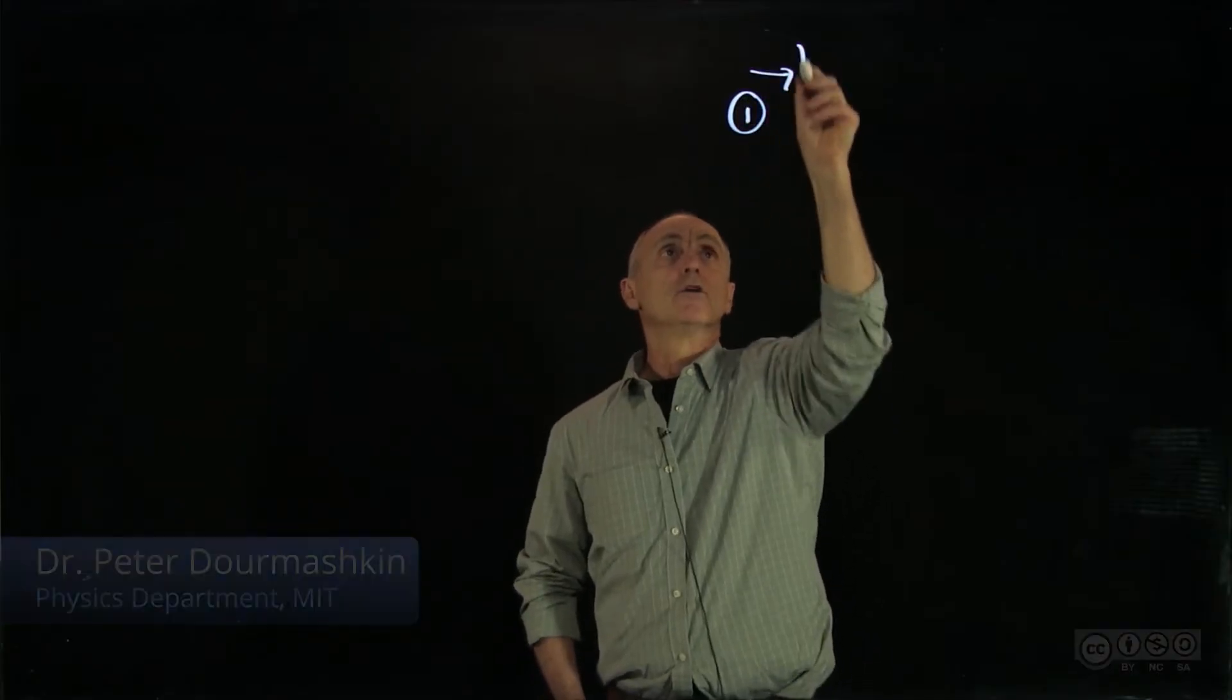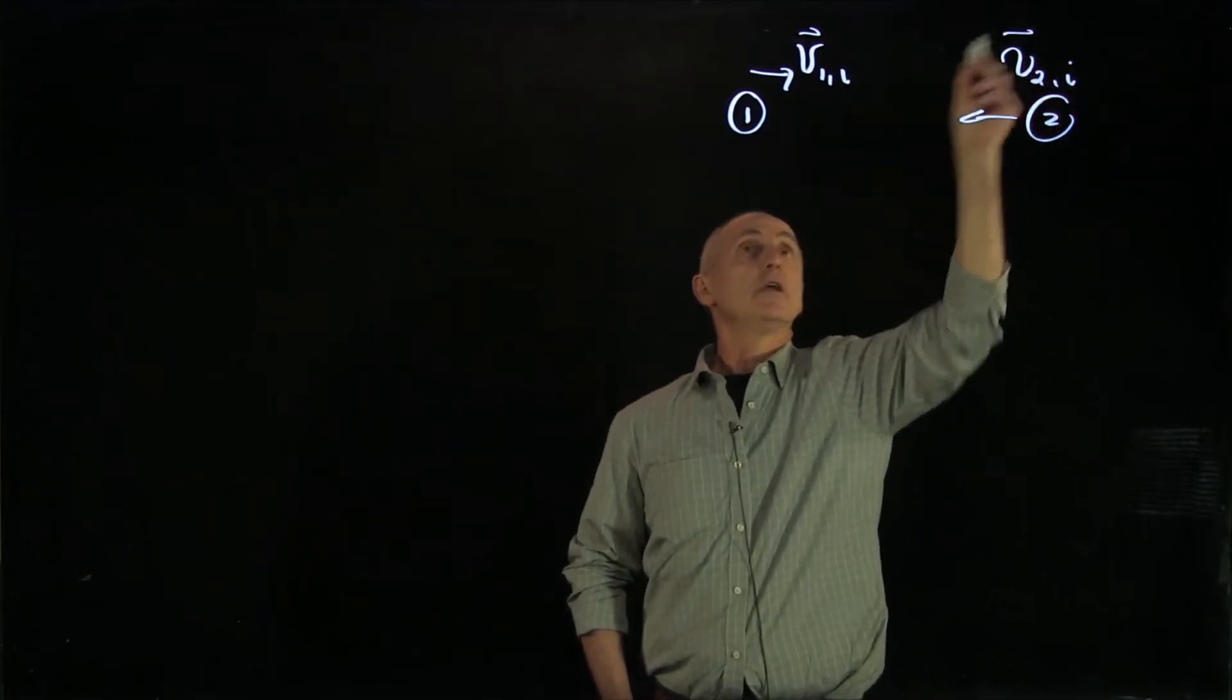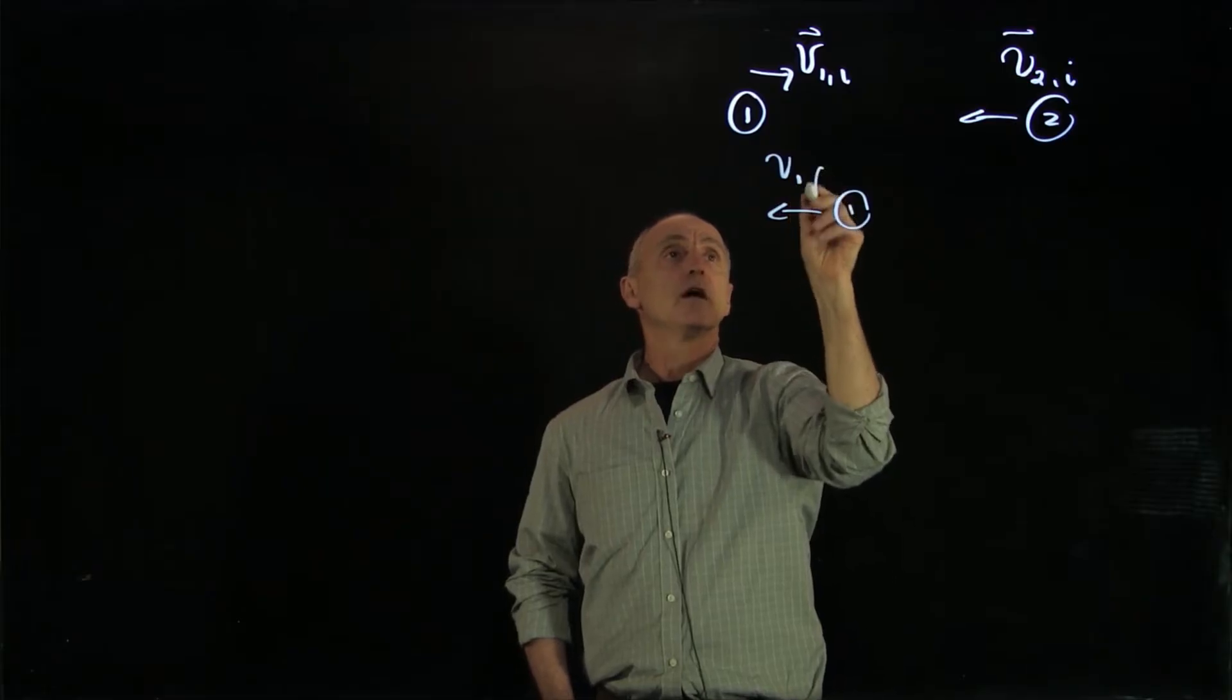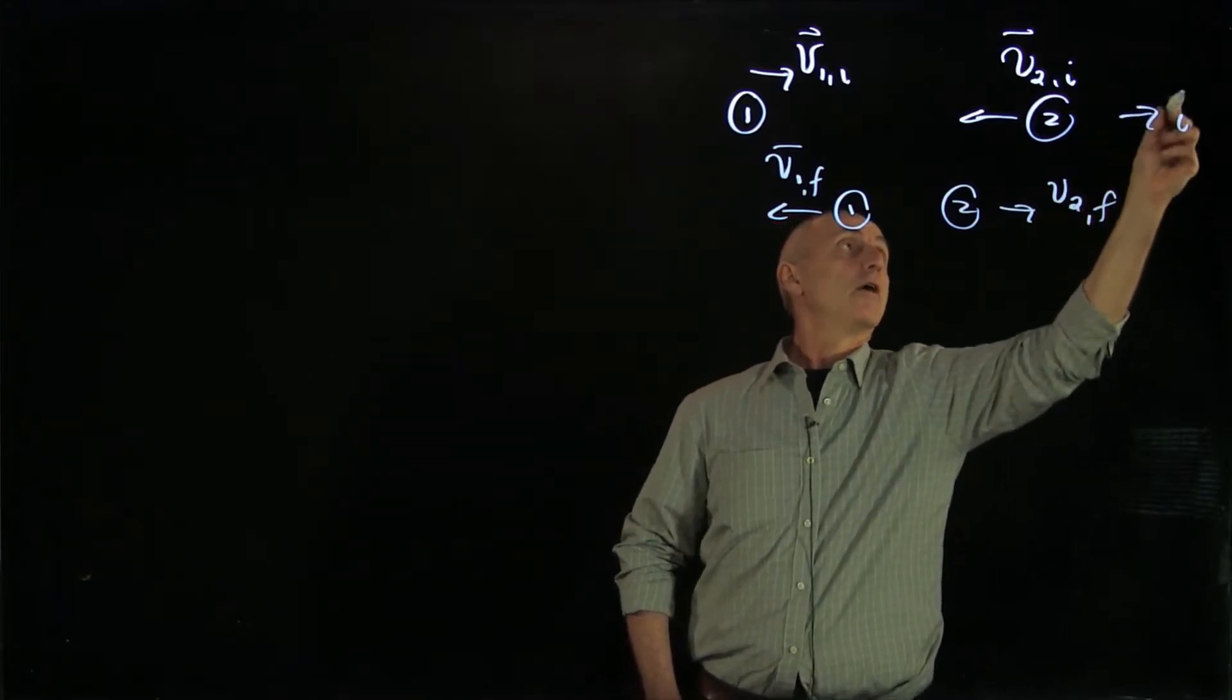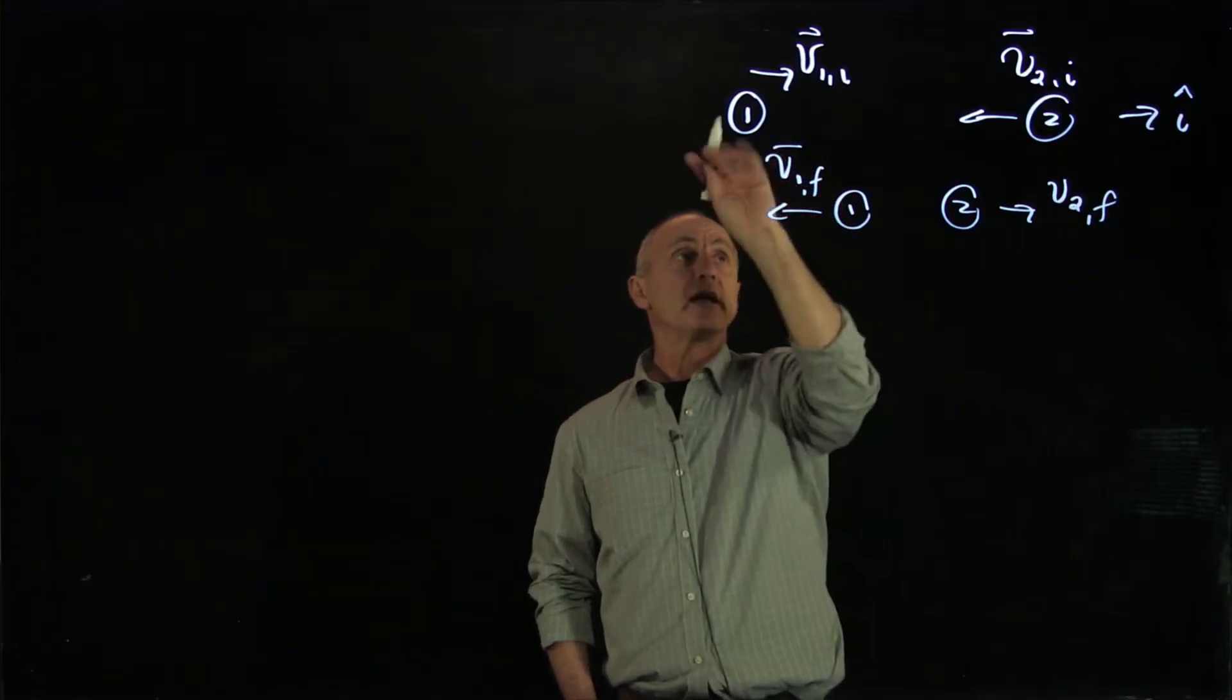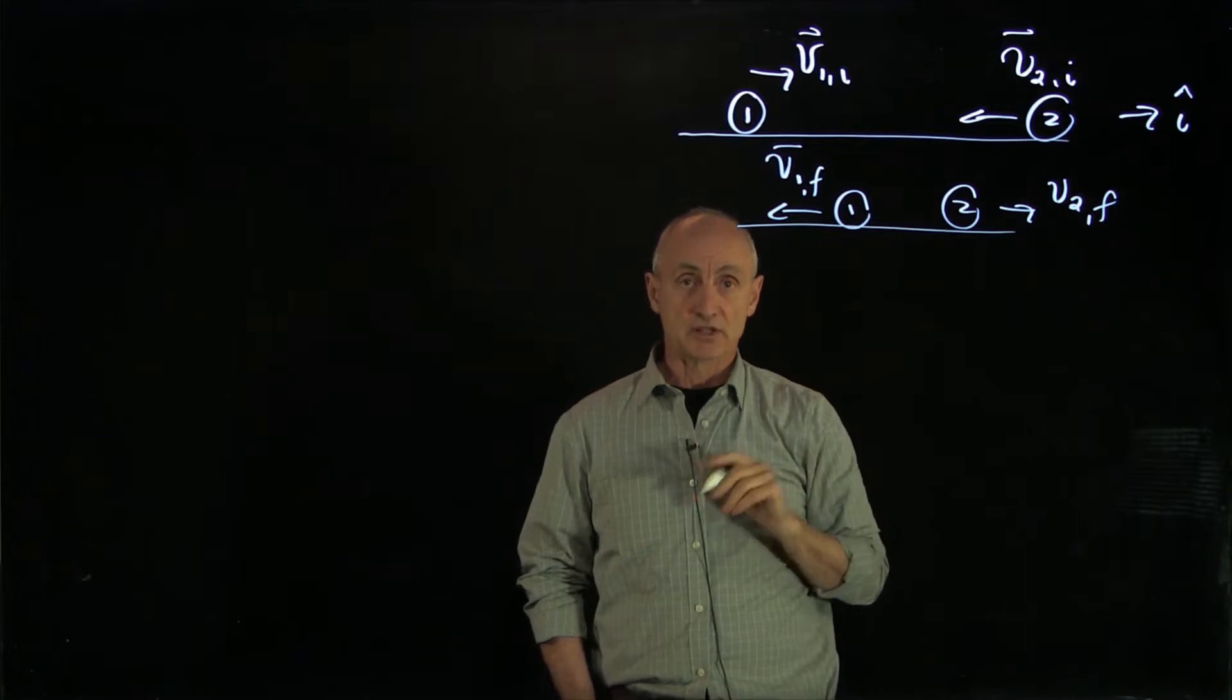We analyzed our one-dimensional collision, where we had object 1 moving with some initial velocity and object 2 also moving with some initial velocity. After the collision, we arbitrarily said object 1 is moving this way and object 2 was moving that way, calling that our i-hat direction. In this collision, we assumed a frictionless surface with no external forces, so momentum was constant.